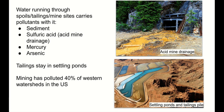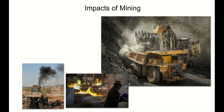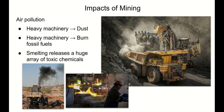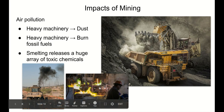Mining has major air pollution impacts as well. Heavy machinery kicks up a lot of dust, which is harmful to anyone who breathes it in — the smallest dust particles can lodge in your lungs and cause irreparable lung damage over time. Heavy machinery also burns fossil fuels, releasing carbon dioxide, nitrogen oxides, and other air pollutants. The smelting process releases a massive array of toxic chemicals. We will have an entire unit on air pollution, so don't stress about these details now — we will return to this later.